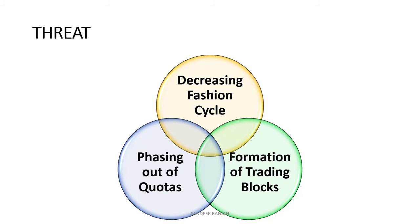There has been an increase in seasons per year, which has resulted in shortening the fashion cycle. Formation of trading blocks has resulted in a change in the world trade scenario. Phasing out of quotas means India will have to open its protected domestic market for foreign players, else the domestic market will suffer.